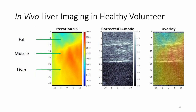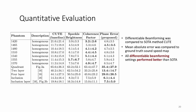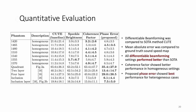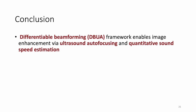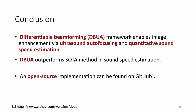In in-vivo liver data from a healthy volunteer, our method estimates sound speeds for fat, muscle, and liver regions that reflect expected values from literature. Our proposed method compares favorably to state-of-the-art methods, and the proposed phase error outperforms other imaging focus metrics in heterogeneous phantoms. In conclusion, differentiable beamforming enables image enhancement via ultrasound autofocusing and quantitative sound speed estimation. Differentiable beamforming outperforms state-of-the-art methods in sound speed estimation, and an open-source implementation can be found on GitHub.